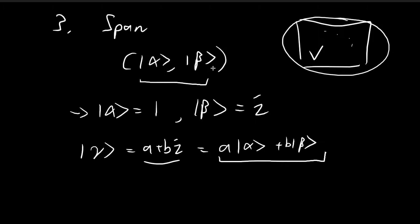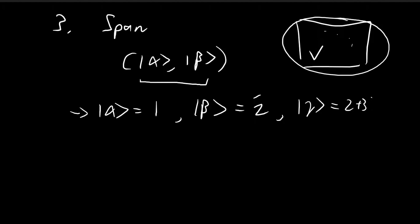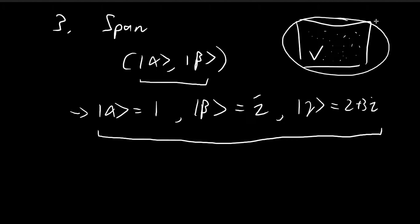We don't need to limit ourselves to two vectors. We could also include gamma equal to 2 plus 3i in the set. We can always use these three vectors to construct any vector within the set of all complex numbers. So alpha, beta, and gamma also span this set, because any element can be expressed as a linear combination of these vectors.